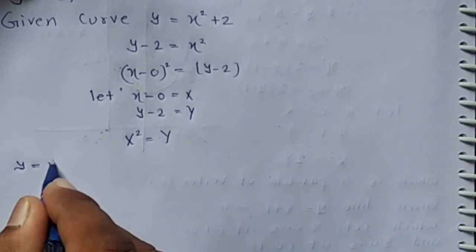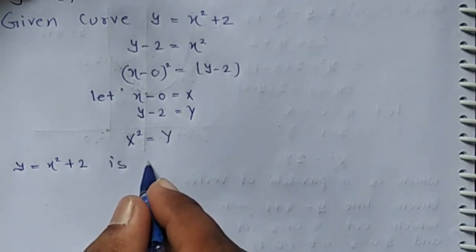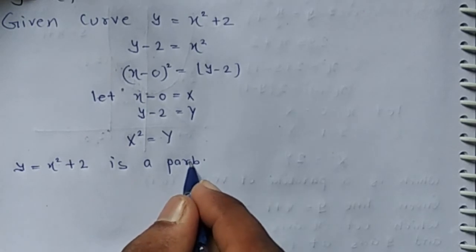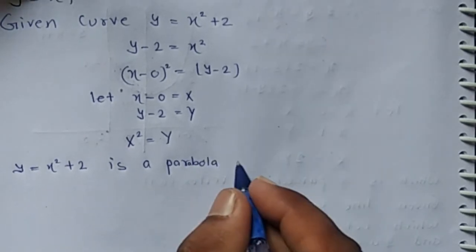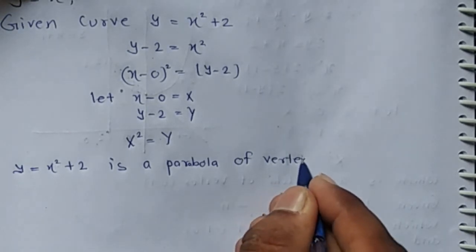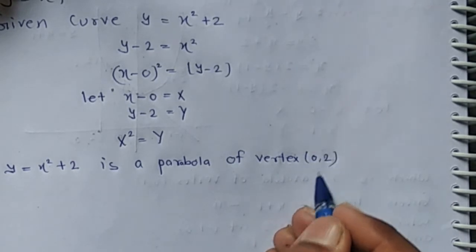This means y equals x squared plus 2 is a parabola of vertex 0 comma 2.